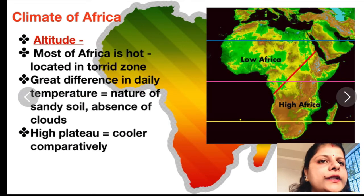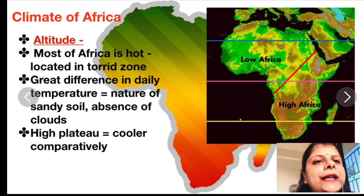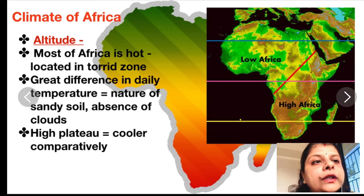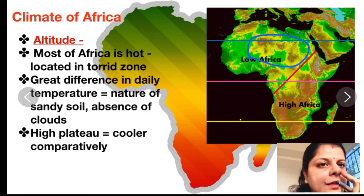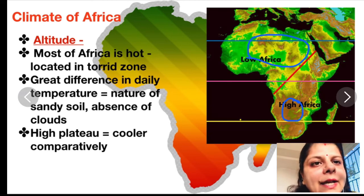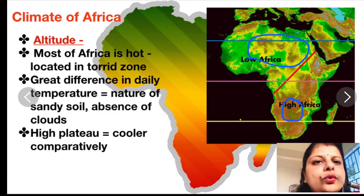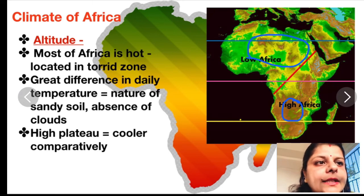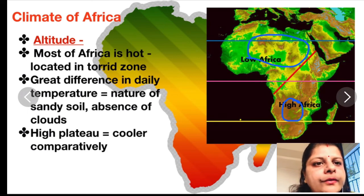Most of Africa is very hot because it is located in the torrid zone, and it experiences a great range of daily temperatures. This is because the torrid zone contains the Sahara Desert in the north and the Kalahari Desert in the south. These desert regions experience a high range of daily temperatures due to sandy soil and the absence of clouds — there are no clouds to stop the heat of the sun, and sandy soil absorbs heat very quickly. However, the higher plateau regions, shown in brown on the map, are comparatively cooler than other parts of the African continent.